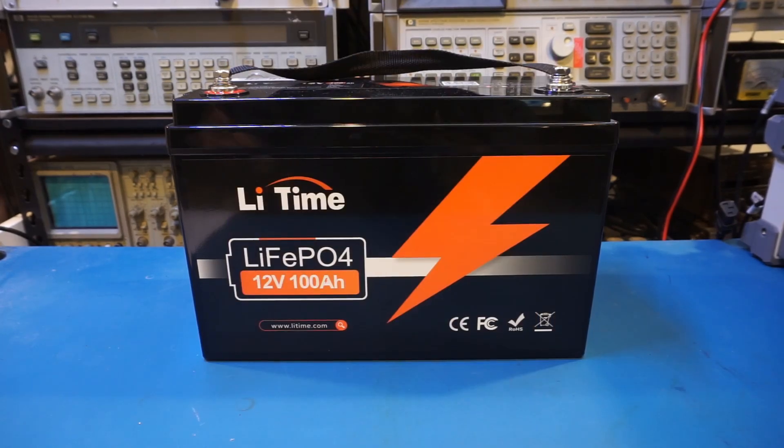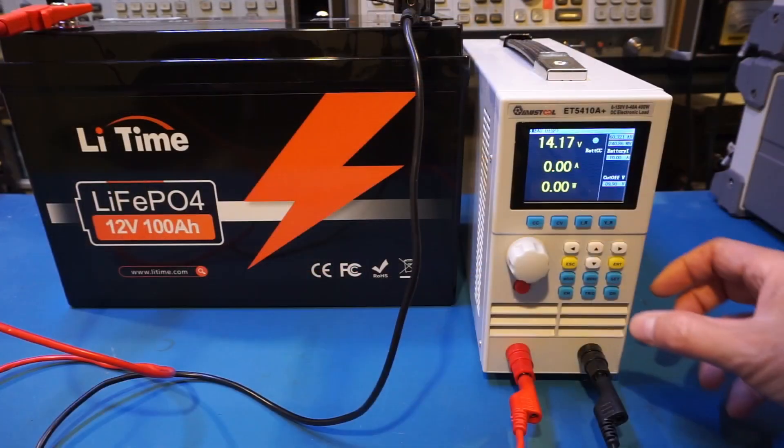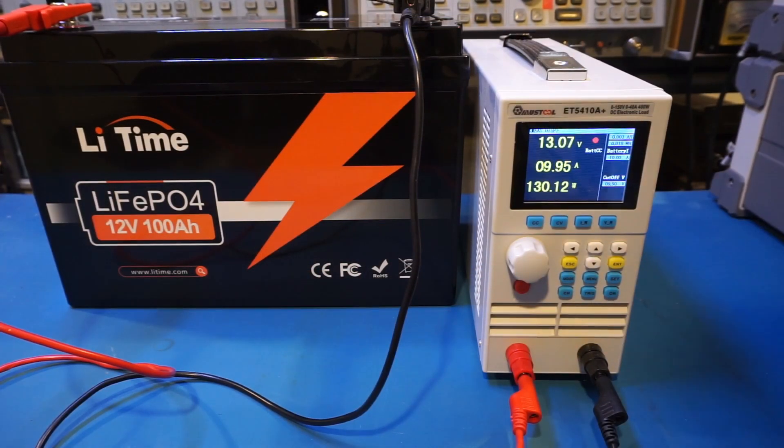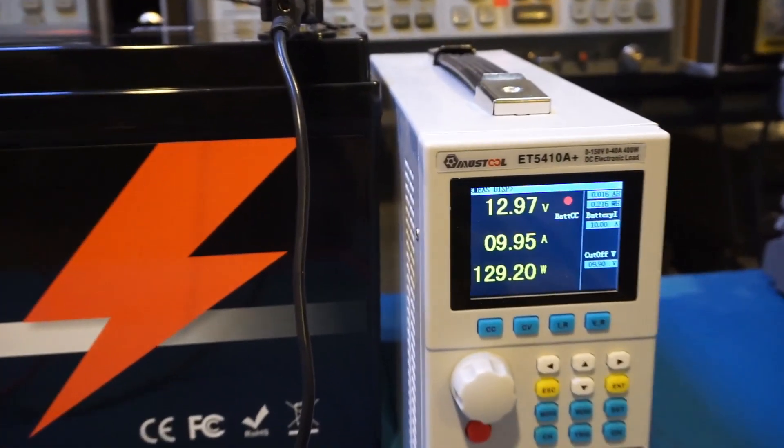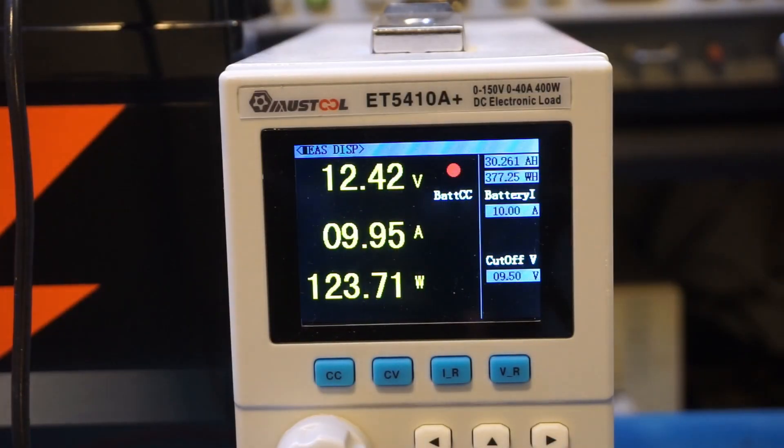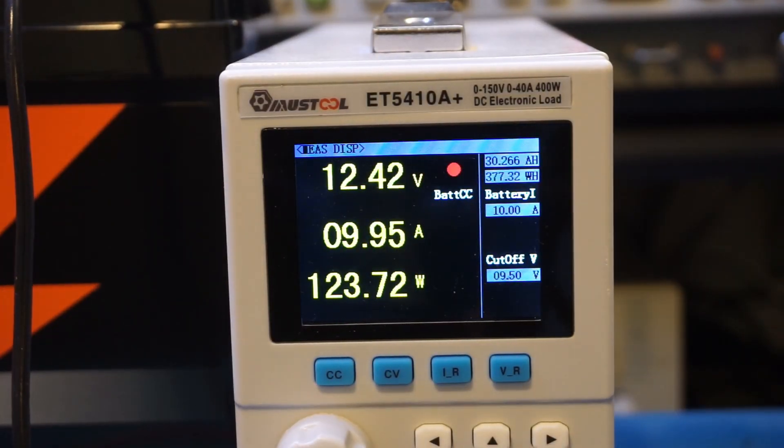To test the battery capacity, I chose the standard 0.1C discharge rate, which is 10A, using my electronic load's battery testing feature. One benefit of an LFP battery is that the discharge curve is fairly flat, compared to other battery chemistries. So the terminal voltage does not drop significantly until the very end of the discharging cycle, as you can see in the video I captured earlier here.